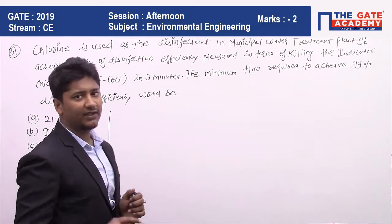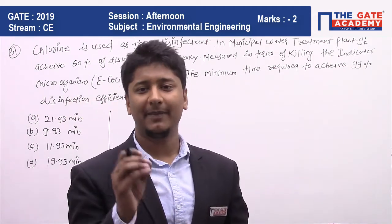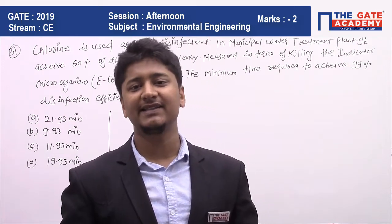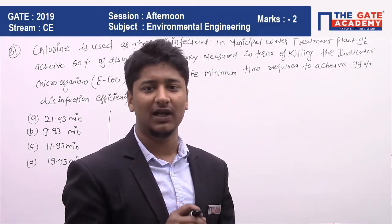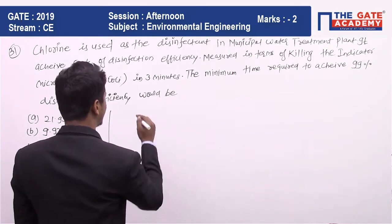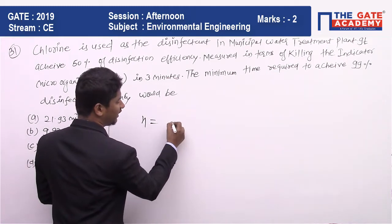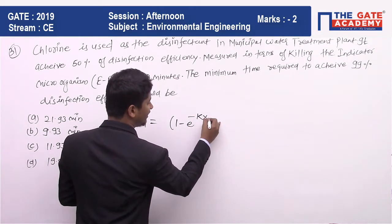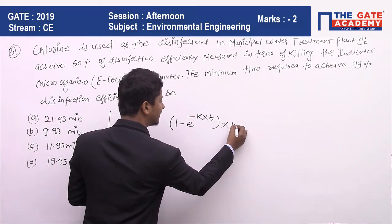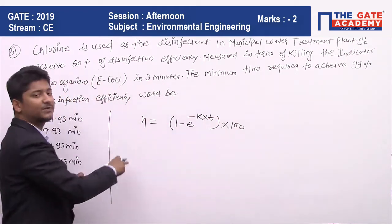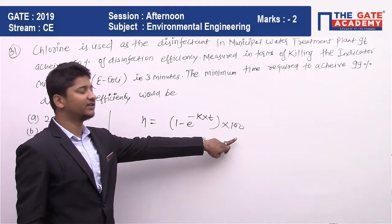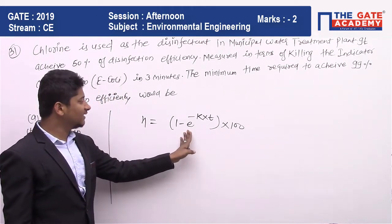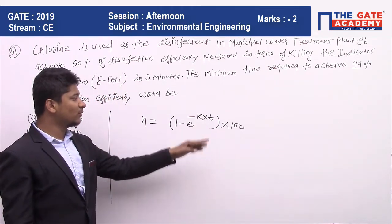In chemical kinetics applied to disinfection, we use the formula: efficiency of disinfection = (1 − e^(−K × t)) × 100, if you want efficiency expressed as a percentage. So the formula is: efficiency = (1 − e^(−K·t)) × 100.